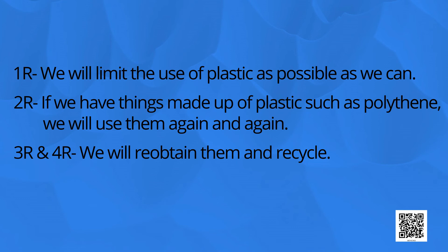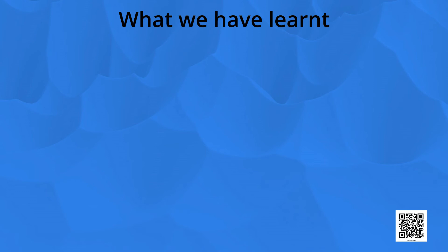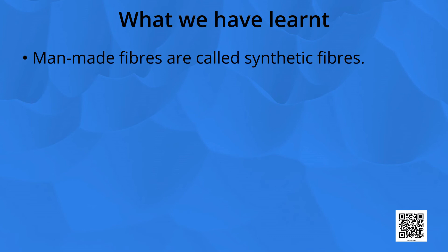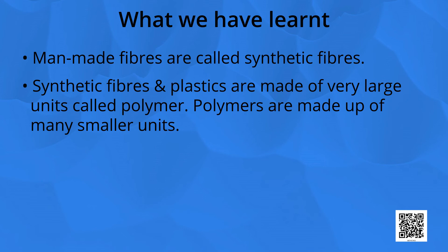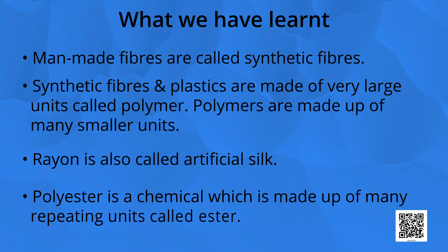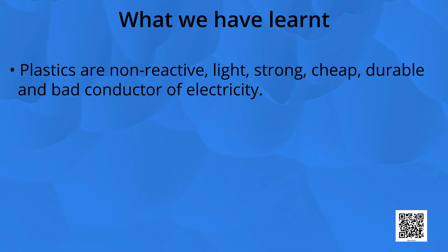Let us now recapitulate what we have done. Man-made fibers are called synthetic fibers. Synthetic fibers and plastics are made of very large units called polymers, which are made up of many smaller units. Rayon is also called artificial silk. Polyester is made up of many repeating units called ester. Plastic is non-reactive, light, strong, cheap, durable and a bad conductor of electricity. Plastic waste is posing a great threat to the environment.